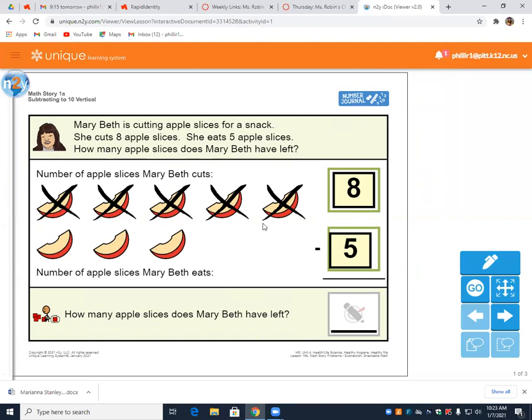They started out with all eight slices. One, two, three, four, five, six, seven, eight. You see the black X on five of those slices, which means those are the ones that she ate. And so we just count what we have left or the remainder, which is three.